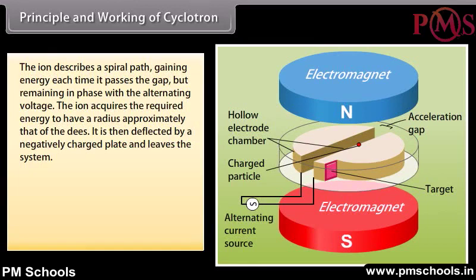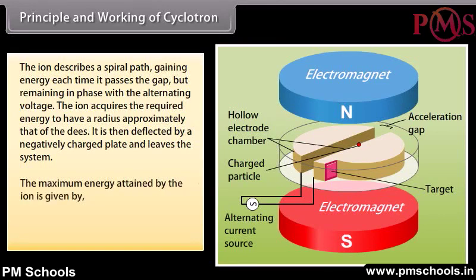The ion acquires the required energy when its orbit radius approximately equals that of the dees. It is then deflected by a negatively charged plate and leaves the system. The maximum energy attained by the ion is given by B²R²Q² / 2m.